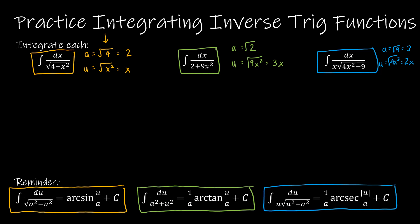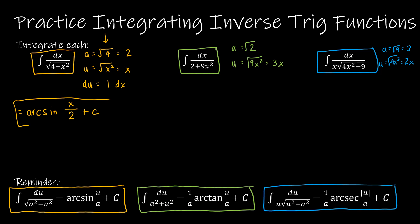For our first question, we already know we're writing arc sine of u divided by a, plus c. The question is: does this fit the pattern exactly, or do I need to adjust it? We find du, which is the derivative of x, just 1 dx. So dx is the same as du, 4 is the same as a squared, and x squared is the same as u squared — everything is exactly as it should be. The solution is arc sine of x divided by 2, plus c. The work needed is just identifying a, u, and du.